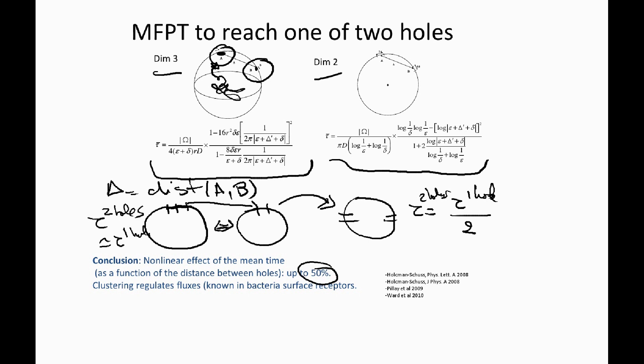This 50% difference can be used in biology, for example, for regulation of fluxes. You can imagine that by clustering holes, if you have a bacteria inside a gradient, so you have here a pipette that creates a gradient of molecules, of signaling molecules, by reclustering receptors that are located here, having a structure where all the receptors can change positions, you can modulate the flux. We will discuss this two-hole effect in the second class.